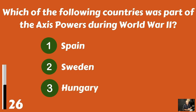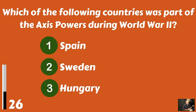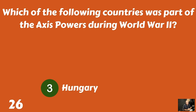Which of the following countries was part of the Axis powers during World War II? Spain? Sweden? Or Hungary? That would be Hungary.